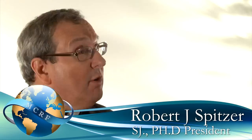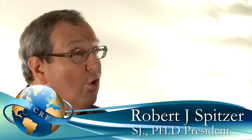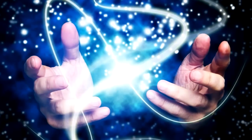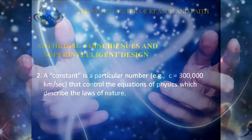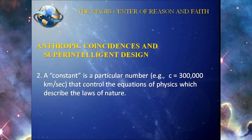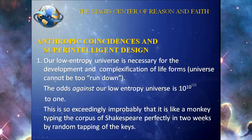I'm Fr. Robert Spitzer, and we've been talking about the evidence for a creator, evidence for a supernatural designer, evidence for God that comes from physics and contemporary astrophysics. We have been talking about the evidence for supernatural design specifically, and we just introduced the notion of a constant, looking at the high improbability of our initial conditions, our low entropy universe, and the need to have some reasonable explanation for why this highly improbable event occurred.